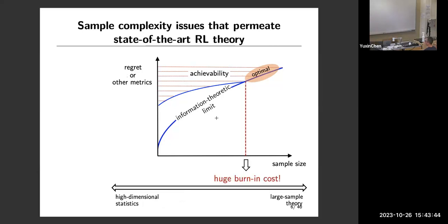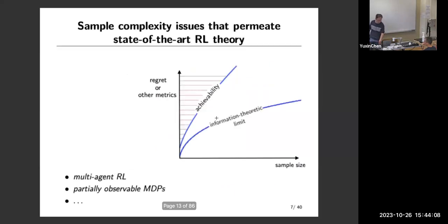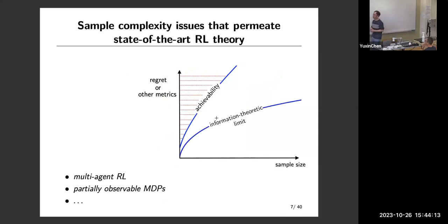Another way to describe this is that many algorithms claimed to be optimal impose a very large burning cost. This burning cost is so large that we do not really like to see it in practice. There are also even harder settings where, even when you allow sample size to go to infinity, there is still a big gap, and this becomes a much harder setting — providing very rich opportunities for people to explore.